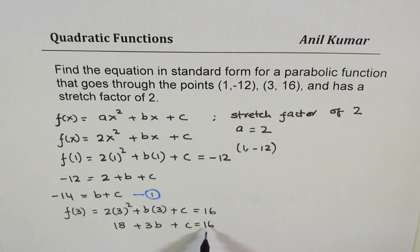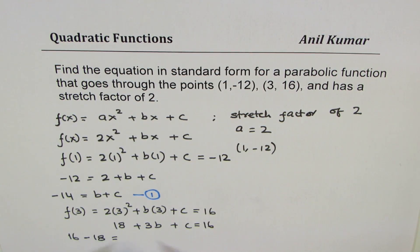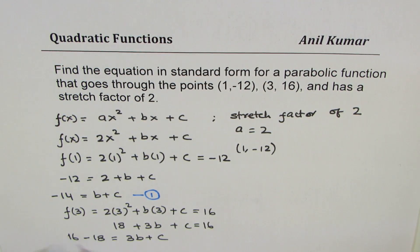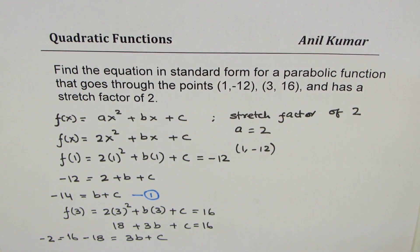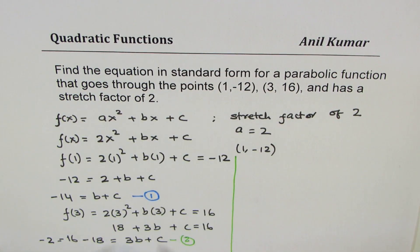So we have 18 + 3b + c = 16. Taking 18 to the right side, we get 16 minus 18 equals 3b + c, which gives us -2 = 3b + c. We call this Equation 2: 3b + c = -2.